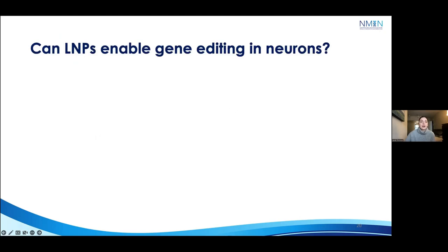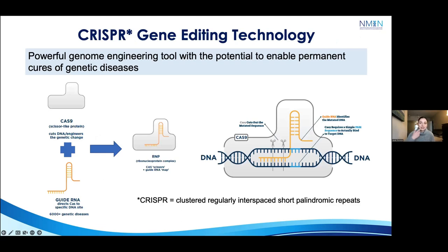We wanted to see if we could use these formulations that effectively deliver payloads to neurons to enable gene editing. We set out to deliver the components of the CRISPR-Cas9 gene editing system using LNPs. CRISPR is comprised of two primary components: the Cas9 endonuclease protein, which cuts DNA, and the guide RNA, which directs Cas9 to cut at a specific locus dictated by its target sequence. The Cas9 protein and guide RNA come together in the cell to form a ribonucleoprotein complex, which can then cut and edit genomic DNA at the guide RNA-specified location.